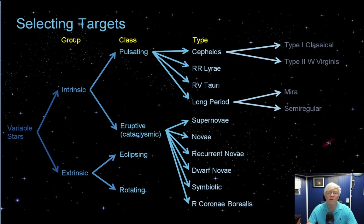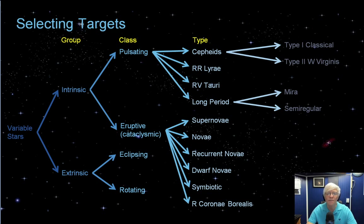Each type of variable star has a story to tell and is a piece of the puzzle of how stars are born, how they live, and how they die. For example, Mira variables are giving us a glimpse of what the future holds for our sun — one day our sun will become a red giant, probably a Mira-type variable. And by studying Miras today, we can figure out what our sun will be going through in the very distant future. It's important to recognize that every star was a variable star at some point in its life.